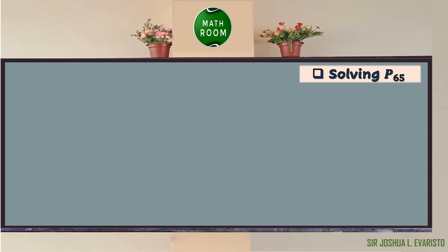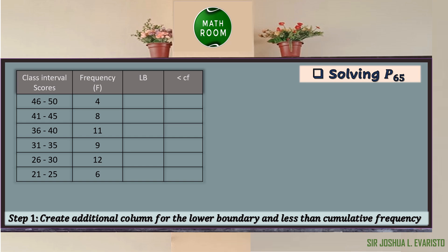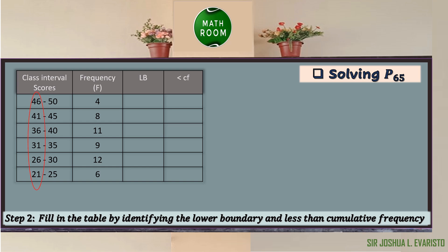To solve the 65th percentile, step one is to create additional columns for the lower boundary and less-than cumulative frequency. Step two is to fill in the table by identifying the lower boundary and less-than cumulative frequency. To identify the lower boundary, we subtract 0.5 from the lower limit in each class: 21 minus 0.5 gives 20.5; 26 minus 0.5 gives 25.5; 31 minus 0.5 gives 30.5; 36 minus 0.5 gives 35.5; 41 minus 0.5 gives 40.5; 46 minus 0.5 gives 45.5.